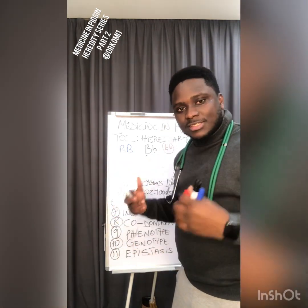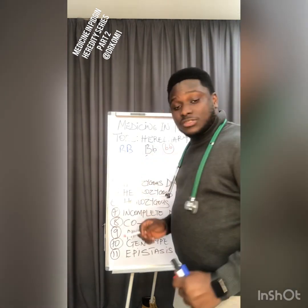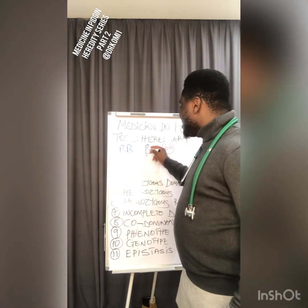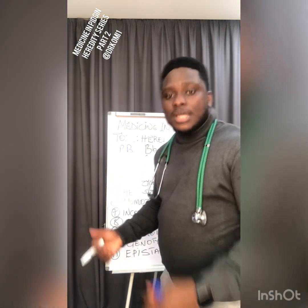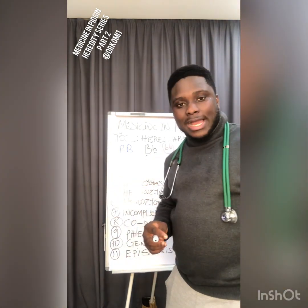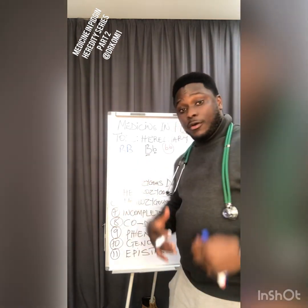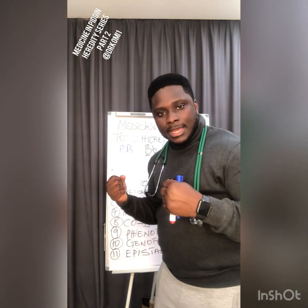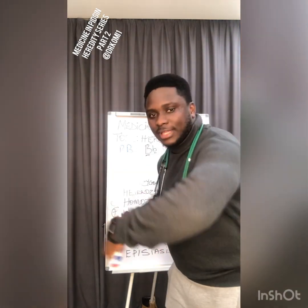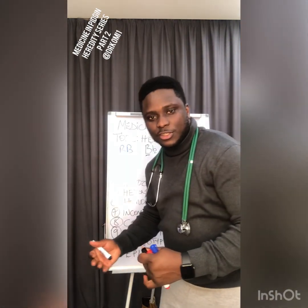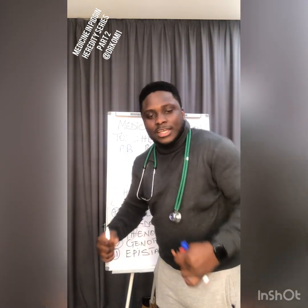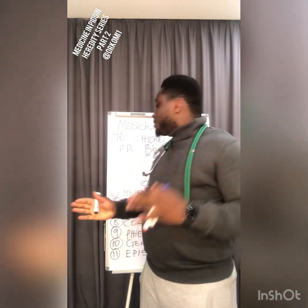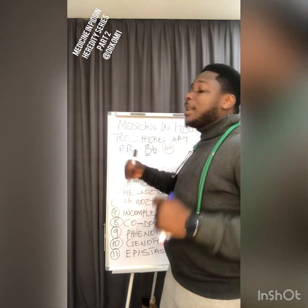So homozygous recessive means two recessive genes that individually are not easily expressed, but since both are recessive and present together, they will be expressed. For heterozygous — one dominant and one recessive — the dominant gene will actually be expressed. It's like a fight for a seat: the dominant one will push the recessive one out and sit in the seat. The recessive one cannot come out no matter how hard it tries.